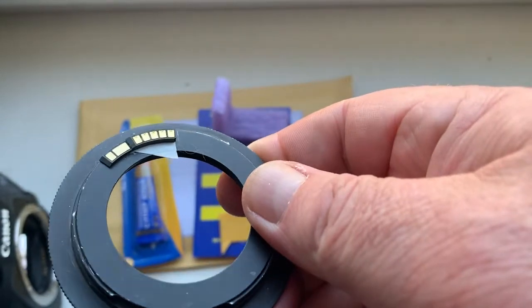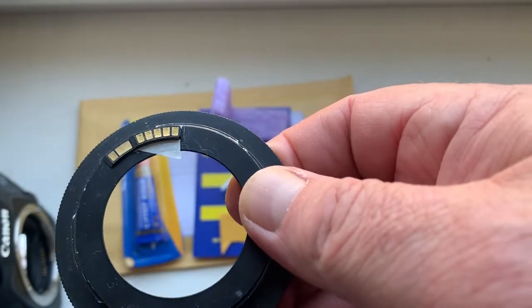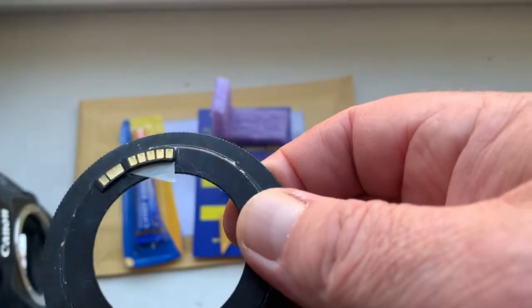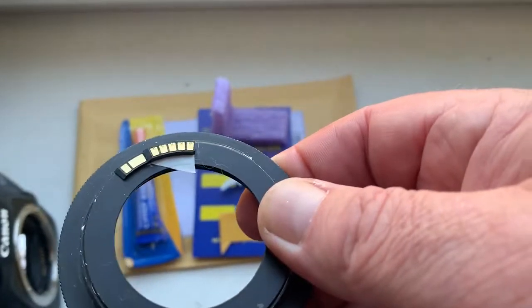When you install the chip on double-sided adhesive tape and check it in your camera, mark the border of the chip on your bayonet.